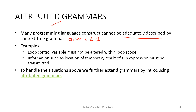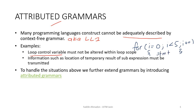that we have discussed before. For example, if you have a loop control variable like a for statement — something like i is less than 5, i plus plus, and then we have curly braces with a statement — the value of i must not be changed inside this code, but currently our LL1 grammar or context-free grammar does not have the capability to do this.